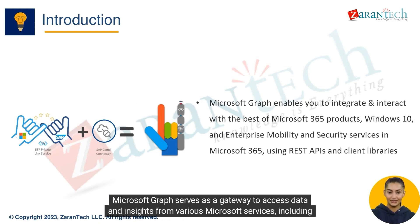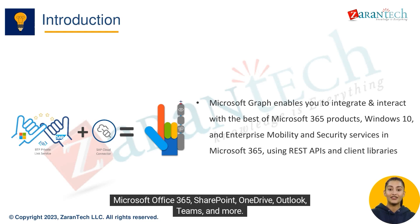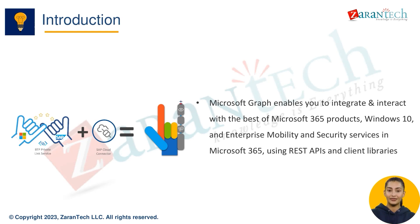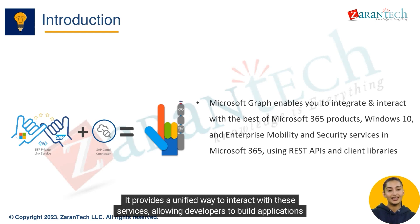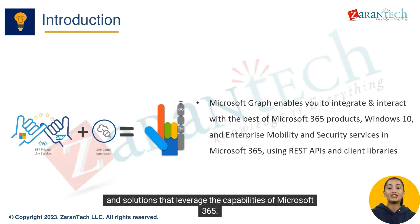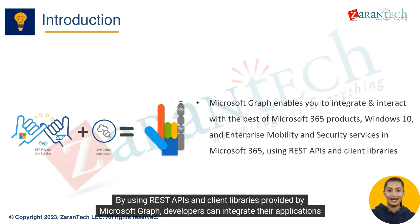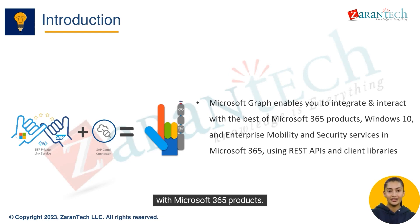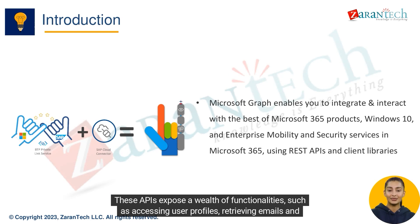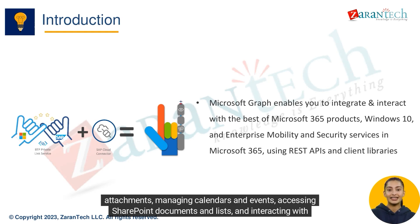Microsoft Graph serves as a gateway to access data and insights from various Microsoft services, including Microsoft Office 365, SharePoint, OneDrive, Outlook, Teams, and more. It provides a unified way to interact with these services, allowing developers to build applications that leverage the capabilities of Microsoft 365 by using REST APIs and client libraries. These APIs expose functionalities such as accessing user profiles, retrieving emails and attachments, managing calendars and events, accessing SharePoint documents and lists, and interacting with Teams.